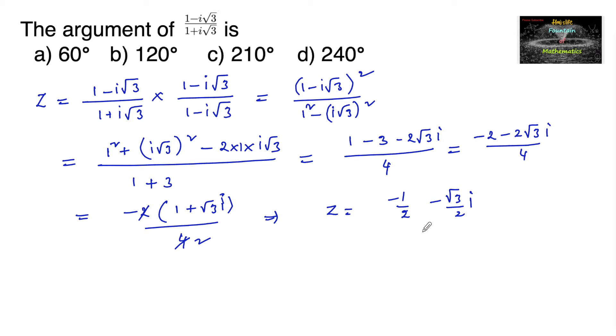This complex number belongs to the third quadrant because both the x-coordinate and y-coordinate are negative. Now let us find the principal argument.